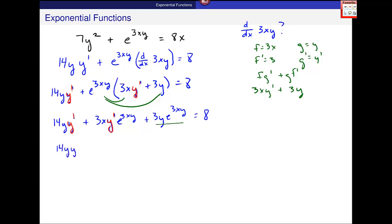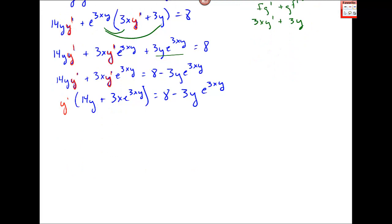So 14y y prime plus 3xy prime e to the 3xy is equal to 8 minus 3y e to the 3xy. And now I have this y prime and this y prime that I'm going to factor out. And what's left, 14y plus 3xe to the 3xy, 8 minus 3y e to the 3xy on the right side. And then I just divide both sides by this thing in parenthesis.